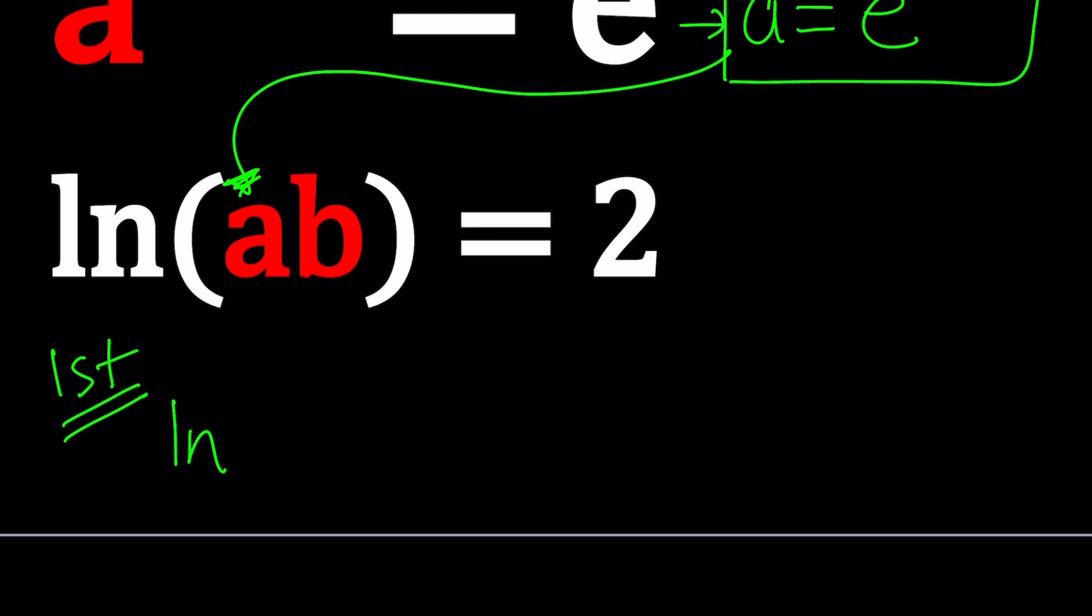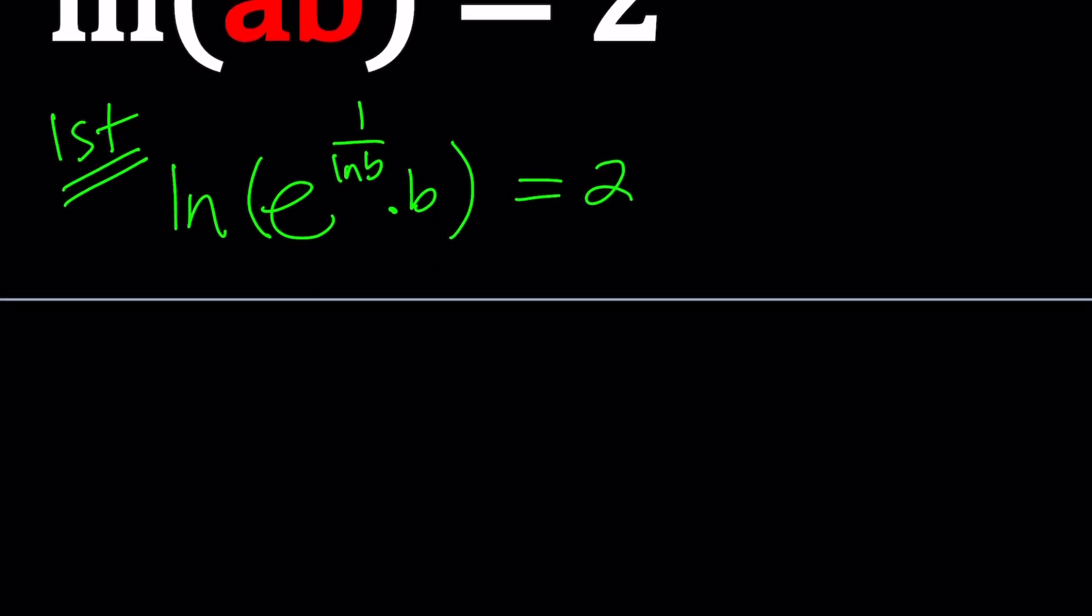It's going to give us ln of e to the power 1 over ln b times b, and then the whole thing is equal to 2. Now, at this point, we obviously have different ways to proceed. One of them is using the definition, so let's go ahead and do that. Since this is a natural log, or the base is e, we can go ahead and write this as e to the power 2 equals e to the power 1 over ln b times b.